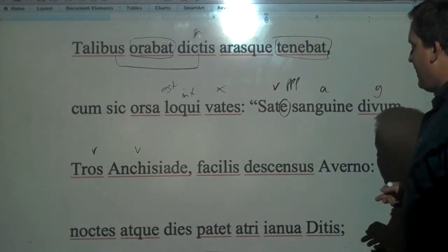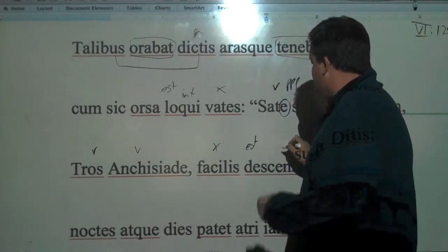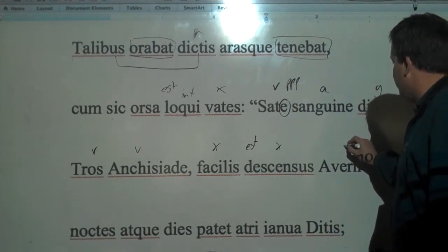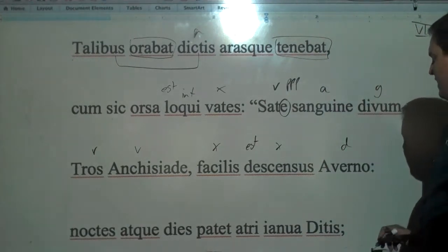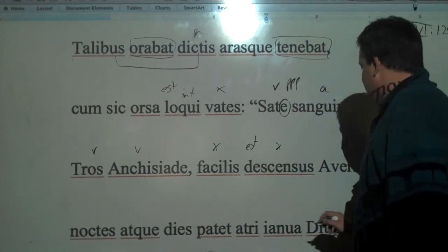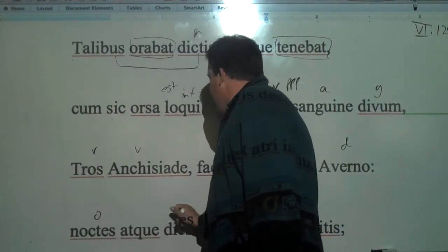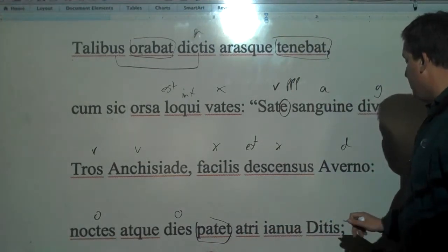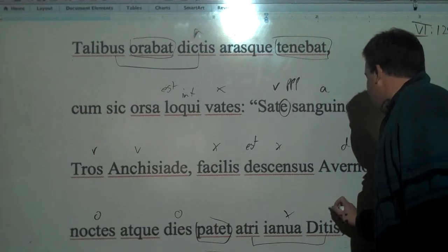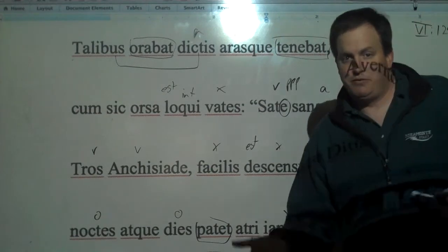And this is kind of a little joke here. Facilis descensus Averno - easy is the descent to the underworld. And that's our verb. These are accusatives of time, of extent - day and night. The door of dark Hades, another word for Hades here, lies open.